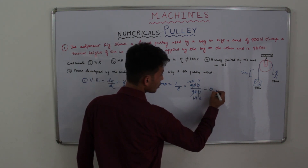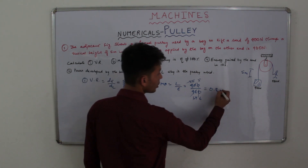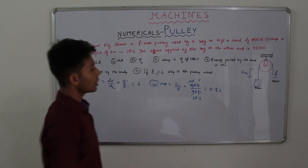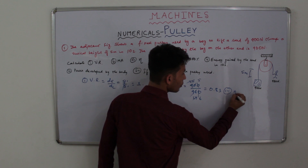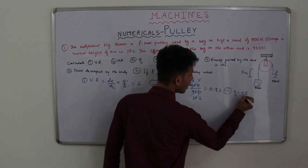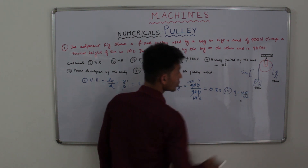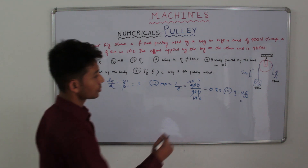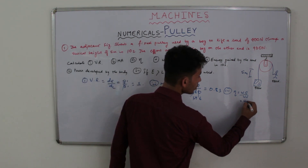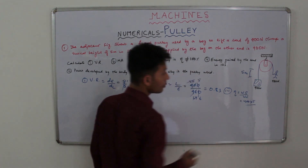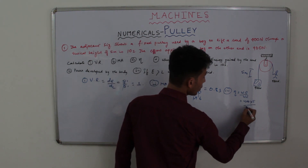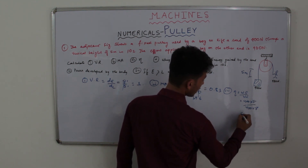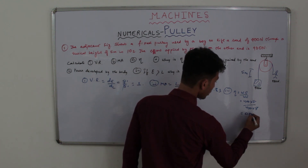So 400 divided by 480 gives 5 by 6, which equals 0.83. So mechanical advantage is 0.83. Number 3 is efficiency. Efficiency equals work output divided by work input. Work output equals 400 Newton into 5 meters, and work input equals 480 into 5. This gives the same ratio as mechanical advantage, that is 0.83.